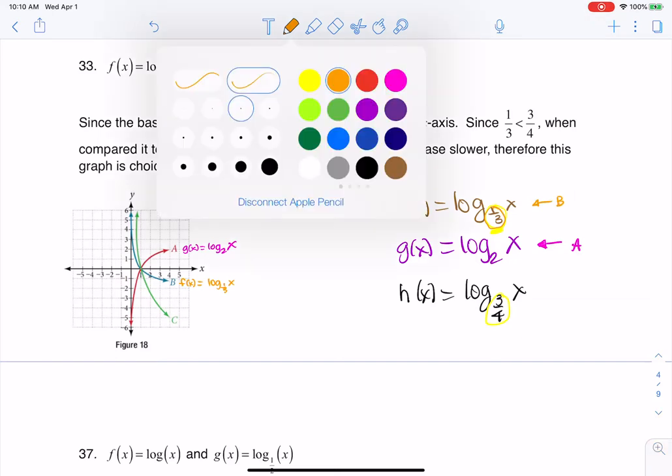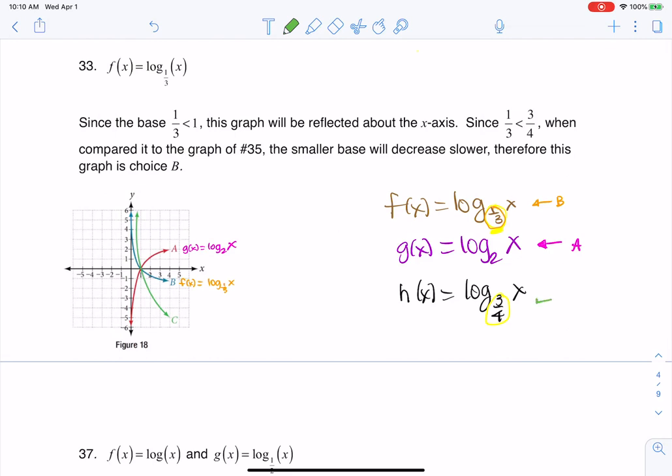And then if we head to the last one, I'll use the green here because it'll actually match. This is going to be graph C. So right here, g of... excuse me, not g of x, h of x is going to be log base three-fourths of x, all right?